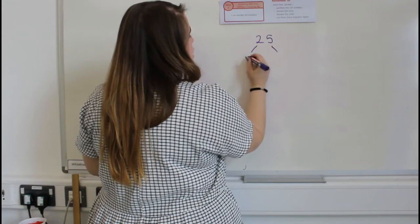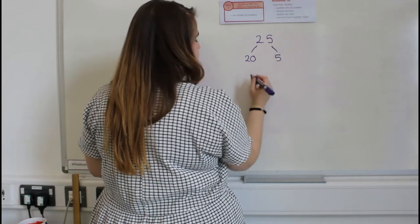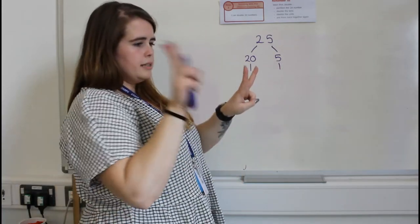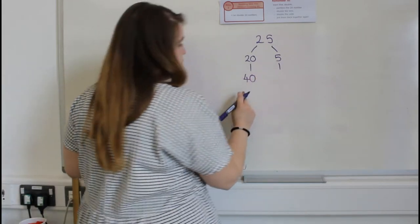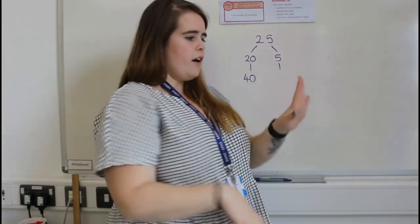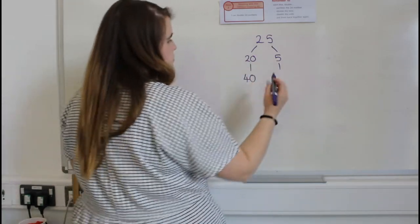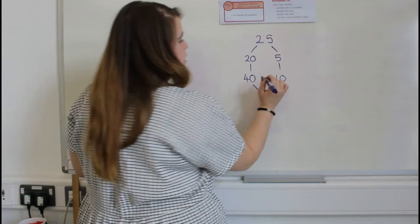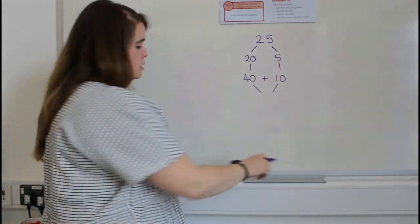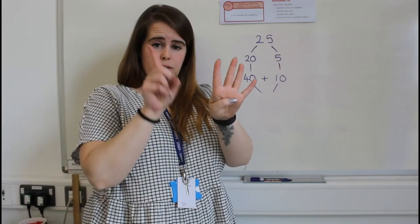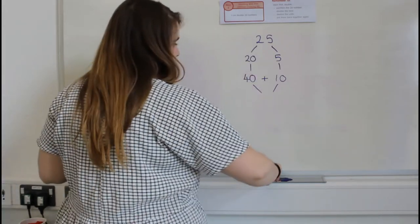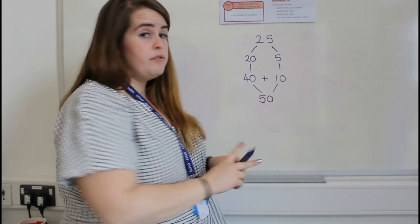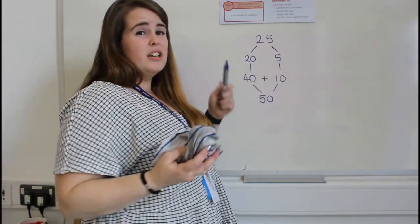We're still going to use the exact same method. Twenty-five becomes twenty and five — we partition it. We still double: double twenty is four tens, which is forty. Five and five is ten. Now, before we put the numbers back together, we've got a tens number, so we need to add them: forty add ten — four tens add one ten — how many tens is that? It's five tens. So double twenty-five is fifty.